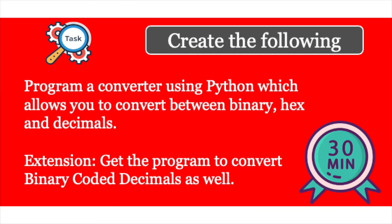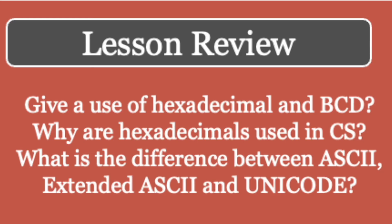Now for something more serious: go to Python. Your task is to create a converter that converts between binary, hex, and decimals — and binary coded decimals if you can manage it. Build a menu system where the user specifies the input base and the target base, the program does the conversion, and a loop makes it repeat. Share it with me via REPL and I'll give you feedback.